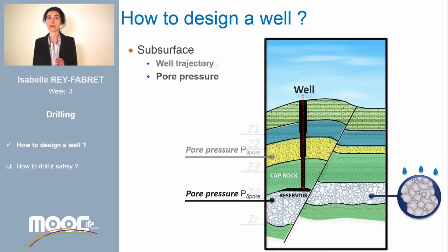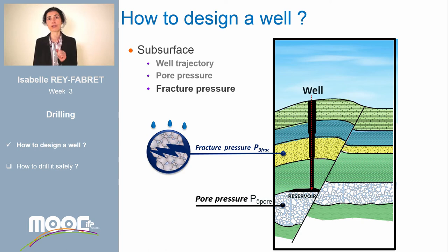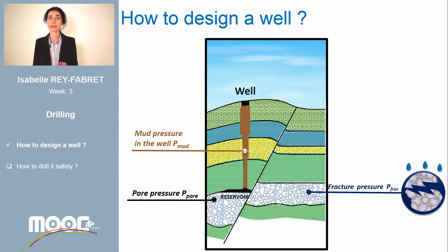For each formation to be drilled, there are two characteristics that need to be known accurately: pore pressure and fracture pressure. Pore pressure is the pressure of the fluid within the grains of the rock. It depends on the depth of the formation and on its nature — sandstone, shale, etc. The fracture pressure corresponds to the minimum pressure to be applied on the rock to generate a fracture. When the formation is drilled, the well is full of a fluid called the drilling mud, which is directly in contact with the rock and applies pressure on it — the pressure of the mud. The mud pressure depends on the depth.